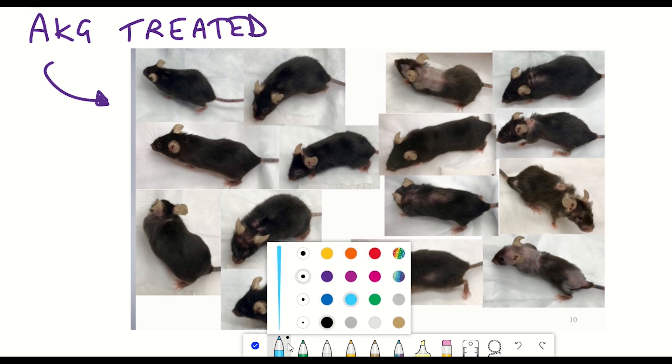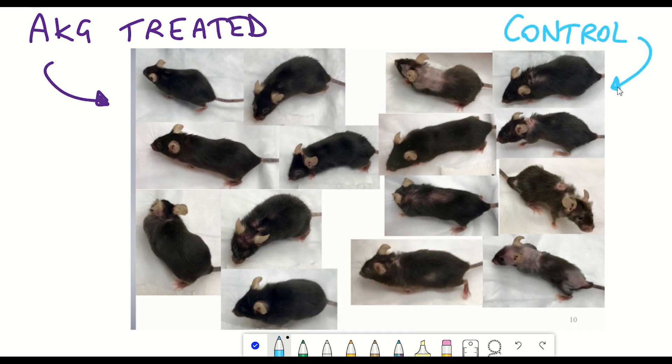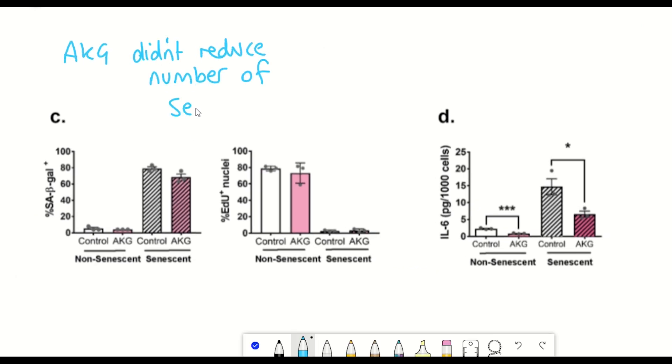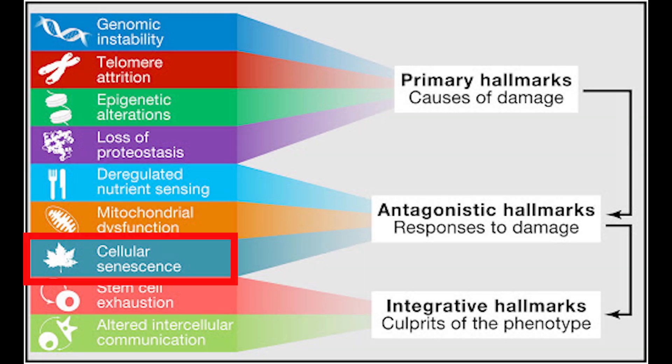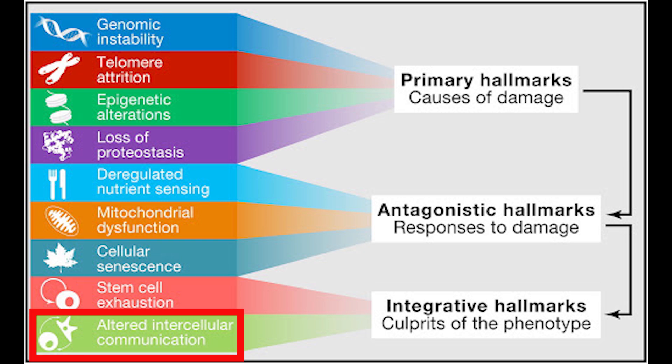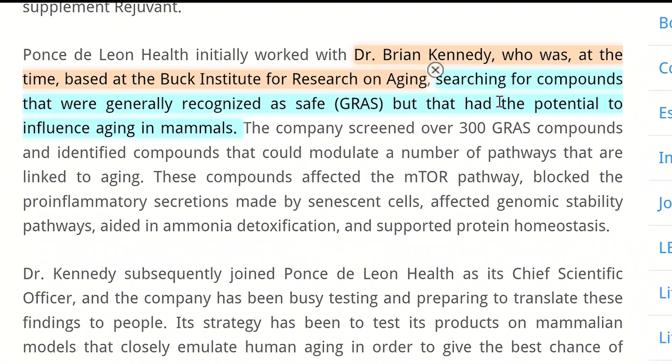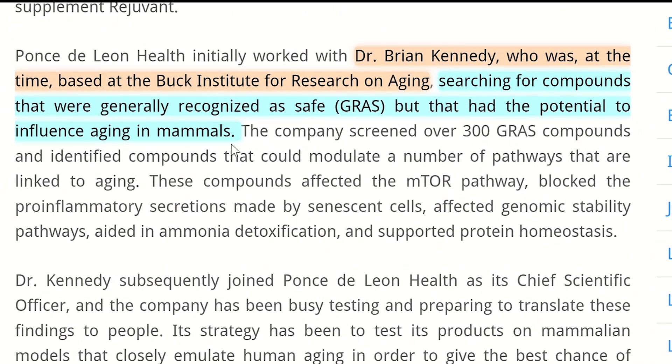They also found in this study that AKG didn't reduce the number of senescent cells, but it reduced the inflammatory secretion of the senescent cells. For example, you can see a reduction in interleukin-6 in the blood plasma. So given that AKG treatment impinges on some of the different hallmarks of aging, such as cellular senescence and intracellular signaling and metabolism, as well as the fact that AKG is generally recognized as safe, I think that AKG is a promising potential anti-aging supplement.